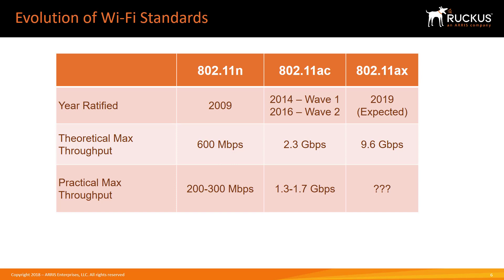With prior generations of Wi-Fi — 802.11a, b, g, and n — the APs could only support up to about 600 Mbps, though practically they couldn't process more than 200 or 300 megabits per second throughput. So 1 gig access ports could more than handle all of the data that the AP could push out.